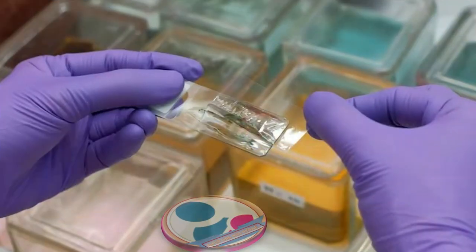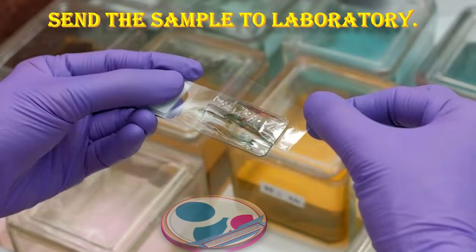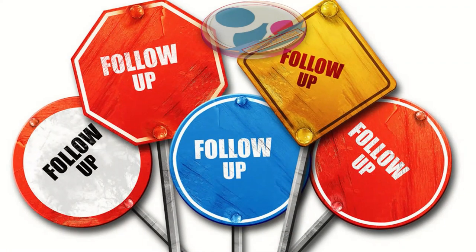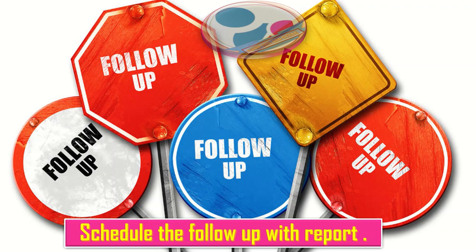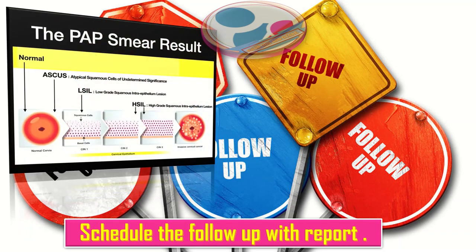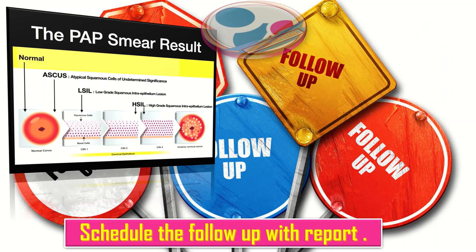Then I will fix the specimen with fixation spray like 95% ethyl alcohol by holding it at 8 to 10 inches from the glass slide, as you can see here. After preparing the slide, I will send the sample to the laboratory. I will schedule the follow-up with the report. The report may be normal or it may show atypical cells or low or high grade dyskaryosis. You can see all these things in my cervical screening guideline video, the link to which you can find in the eye button in the top right corner of this video.